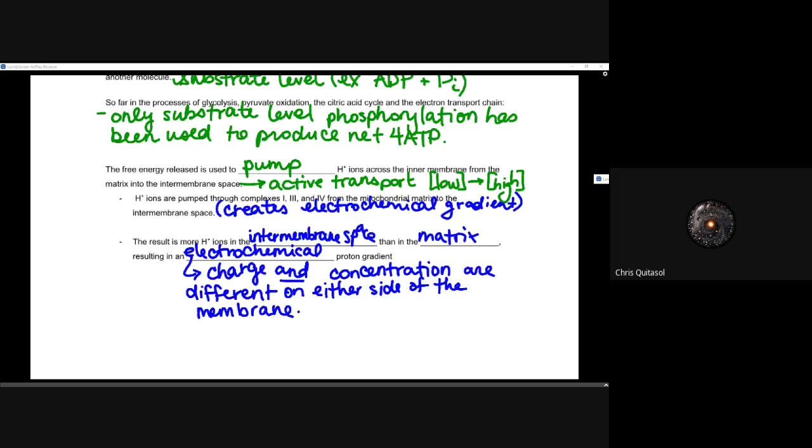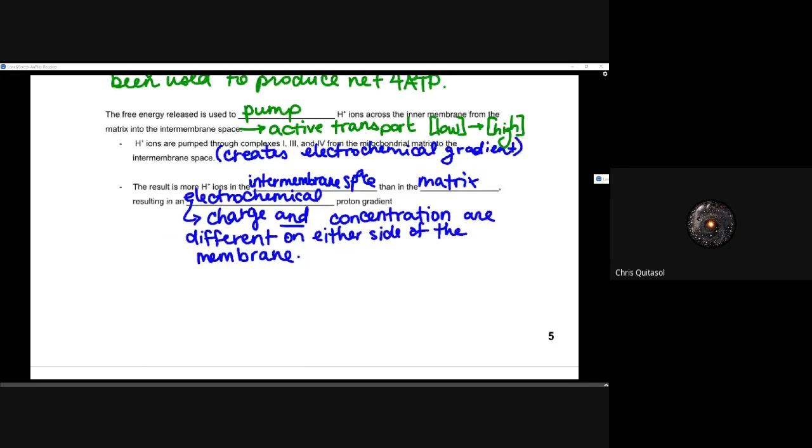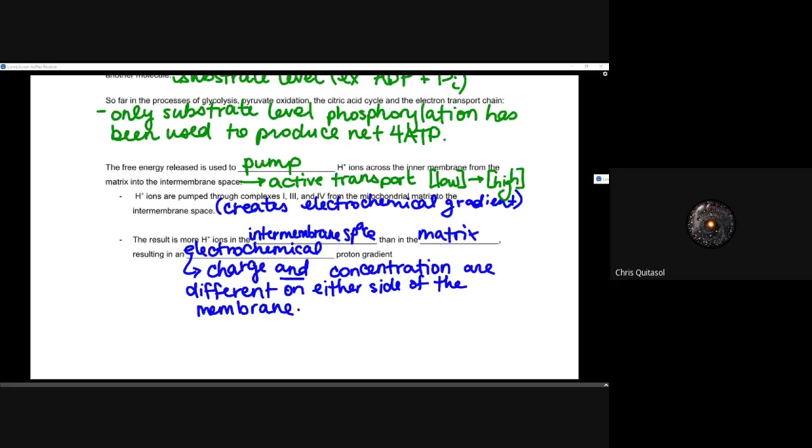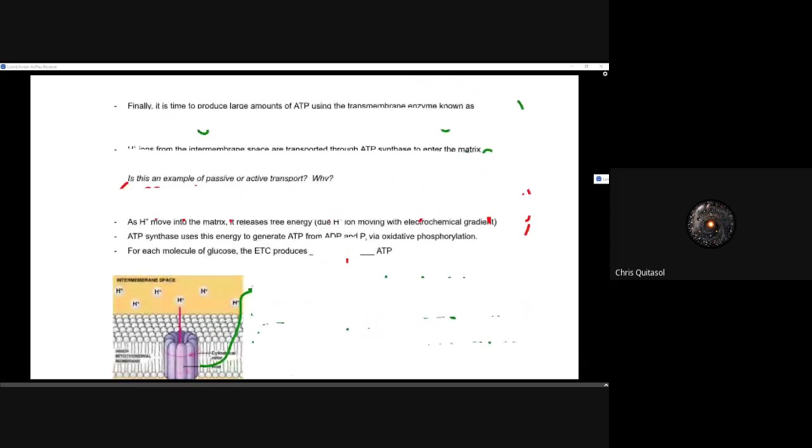So the result is more hydrogen ions in that intermembrane space than in the matrix, resulting in that chemical electrochemical charge and proton gradient. This concentration and charge are different on either side of that membrane. This is going to allow for that huge high concentration outside, right outside that matrix, which we can now utilize to produce ATP via oxidative phosphorylation.